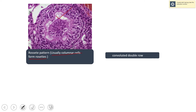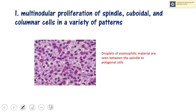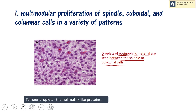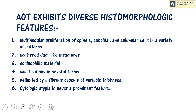Another pattern is the convoluted double row — 'convoluted' meaning folded — so cells are present in folded double rows. There is also presence of droplets of eosinophilic material between the spindle to polygonal cells. These are called tumor droplets and they are consistent with enamel matrix proteins.